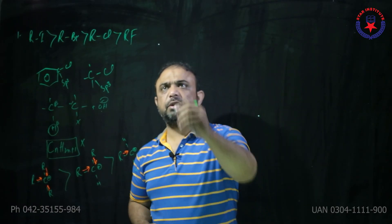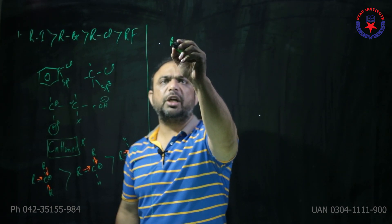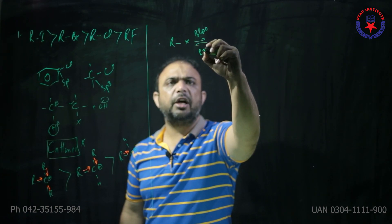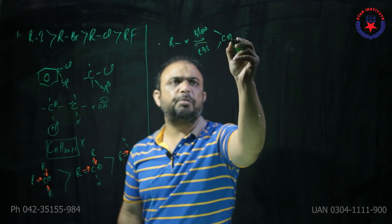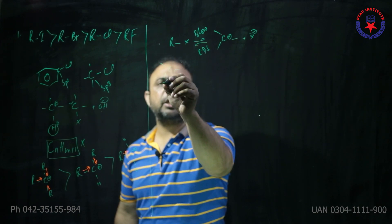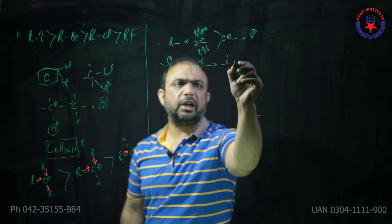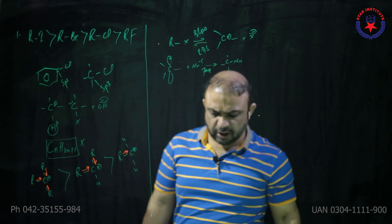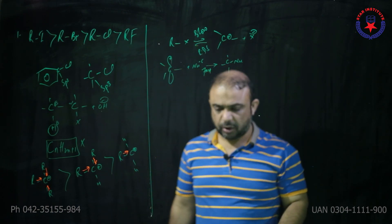The rate determining step in SN1 reaction is always carbocation formation. SN1 mechanism jab bhi aap padhte hain toh aap kehte hain sir is mein hota yeh hai ki SN1 mein leaving group leaves first in a slow rate determining step so the carbocation is formed first. Phir doosre step mein this carbocation is being attacked by a nucleophile and we get a product which is nucleophilically substituted product. Second step fast, pehla step rate determining hai aur bataiye ki is mein kya banta hai, is mein carbocation generate hota hai.